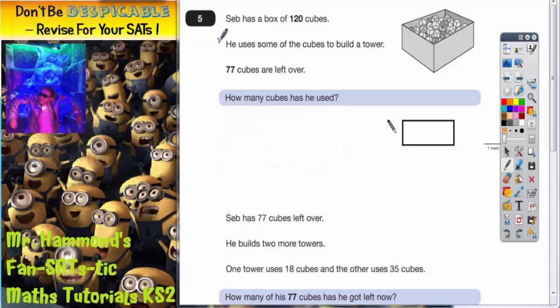Question number five. Seb has a box of 120 cubes which you can see there. He uses some of the cubes to build a tower. 77 cubes are left over.